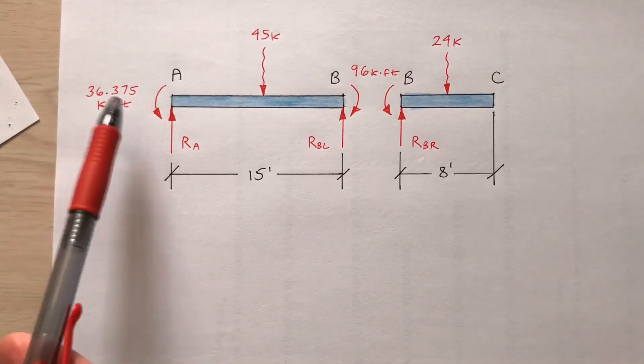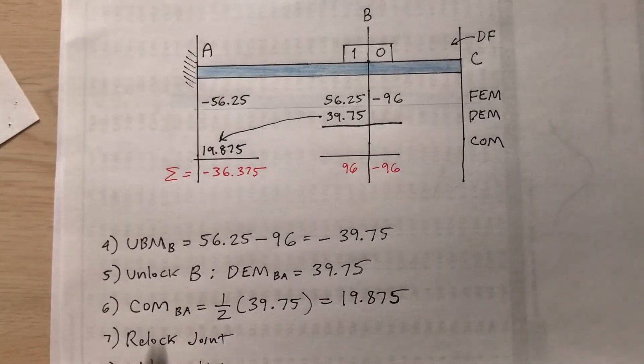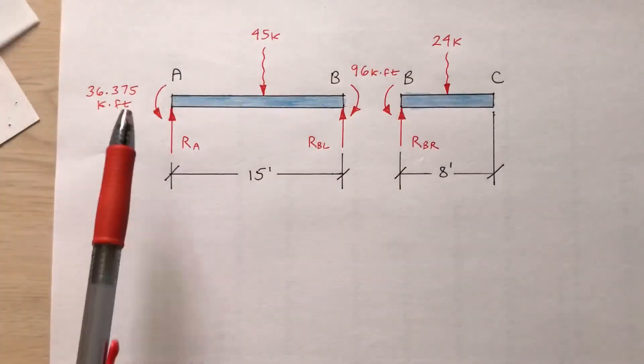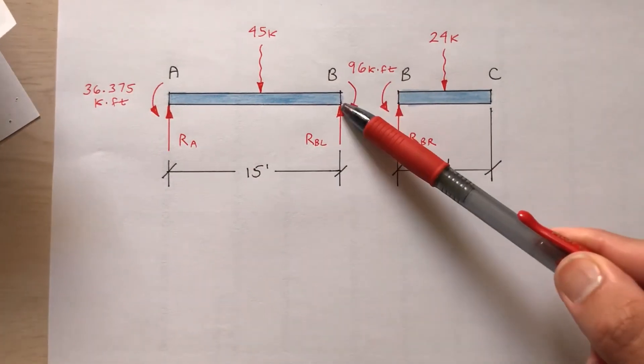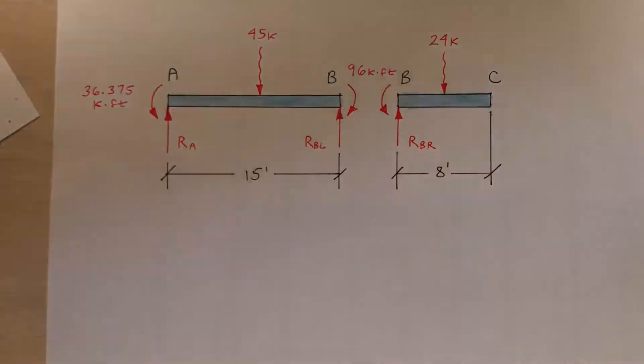Where am I getting the 36.375? Remember the moment distribution? At point A, 36.375 anti-clockwise. There it is. The 96. I'm getting those from this, the moment distribution method.